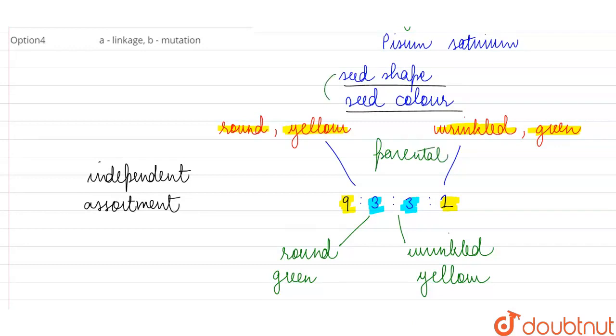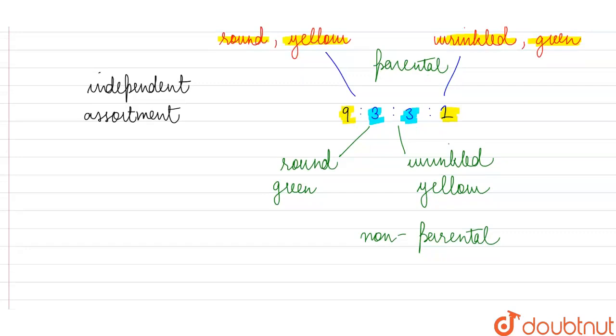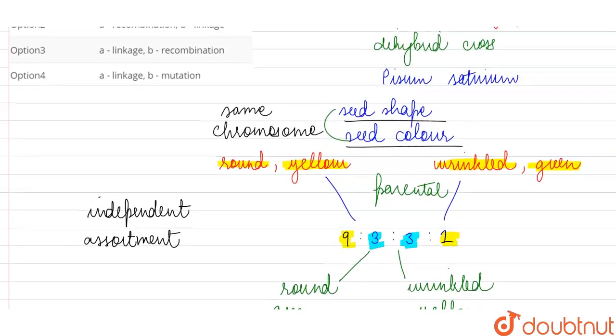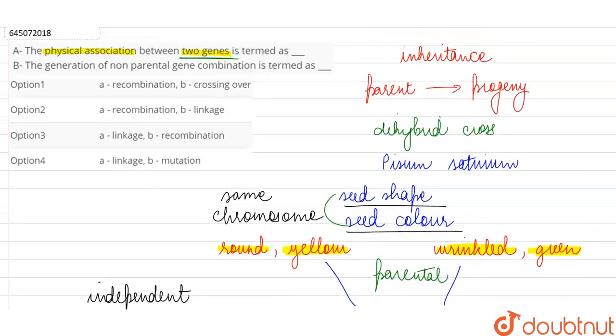However, if these two genes which are controlling the seed shape and seed color, if they were present on the same chromosome, then this would not have been possible. Then we would not have obtained this high frequency of non-parental gene combinations because then these two genes would have had a physical association and they would have shown linkage.